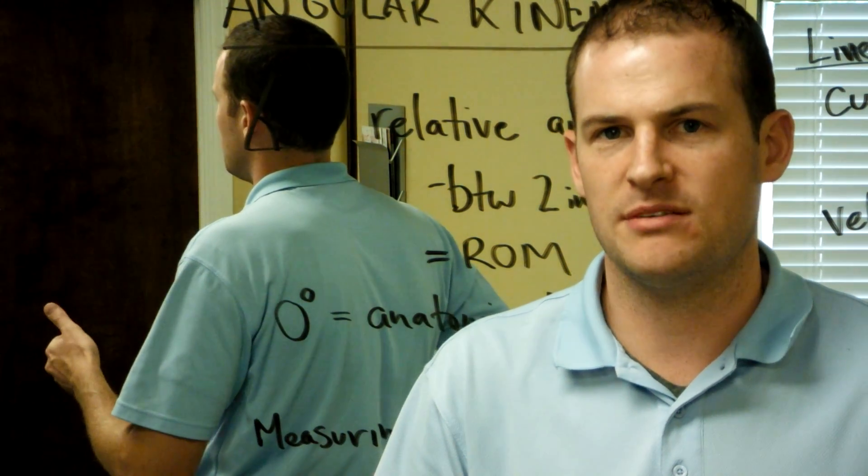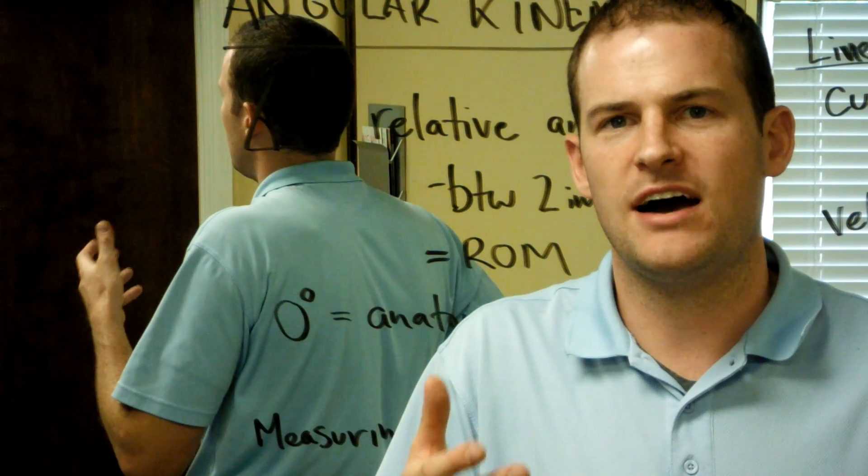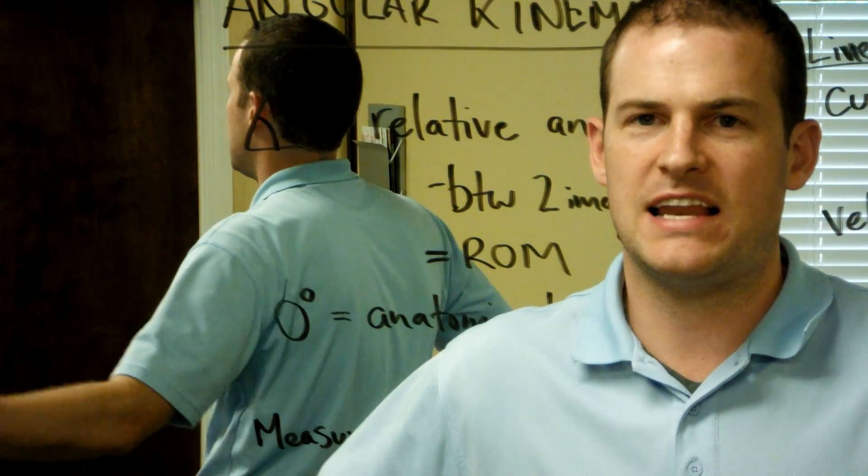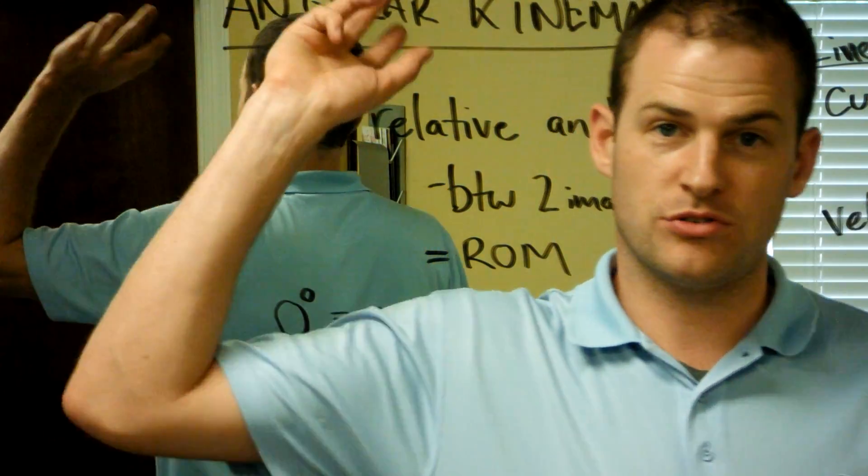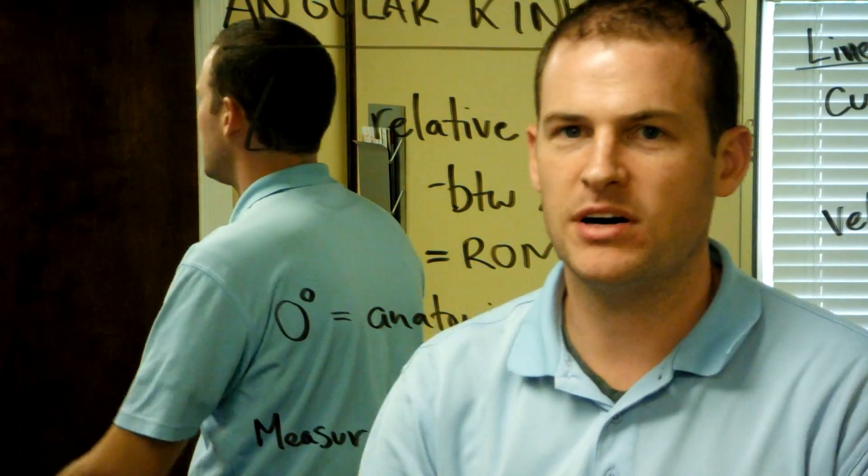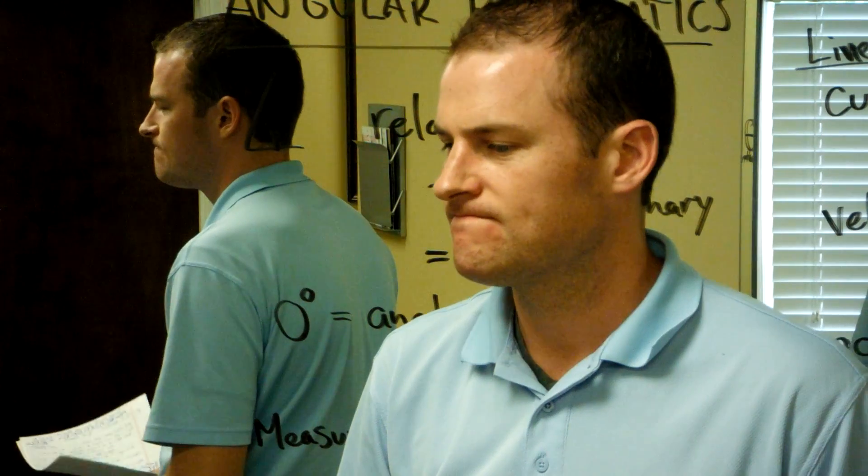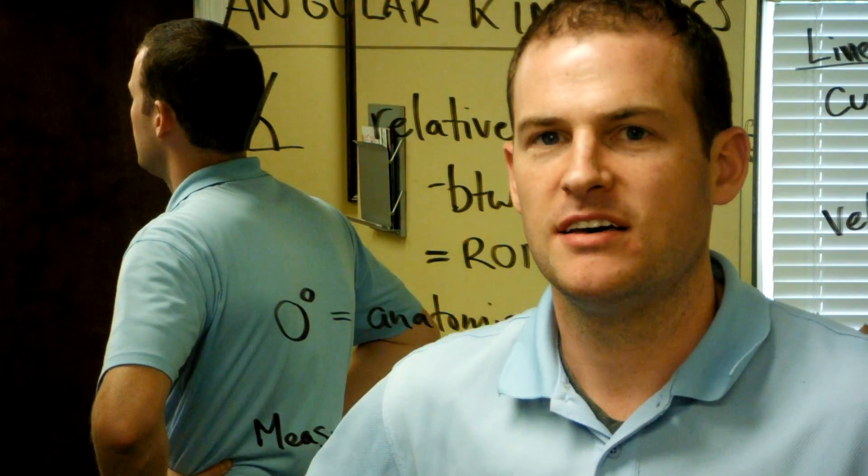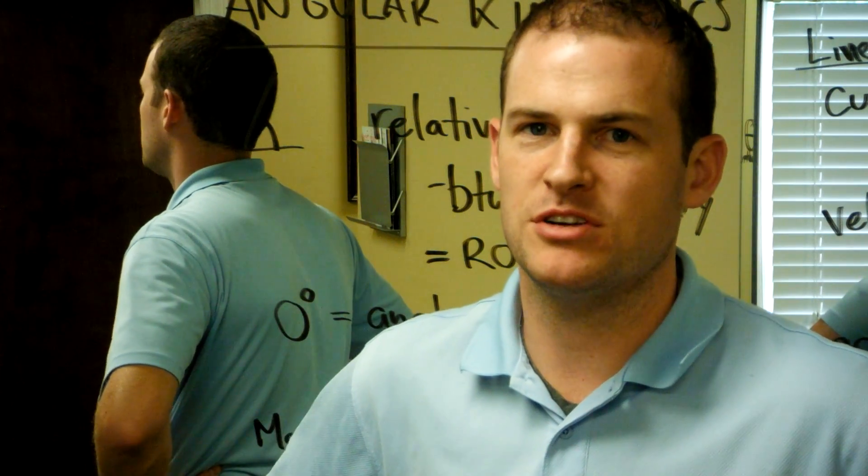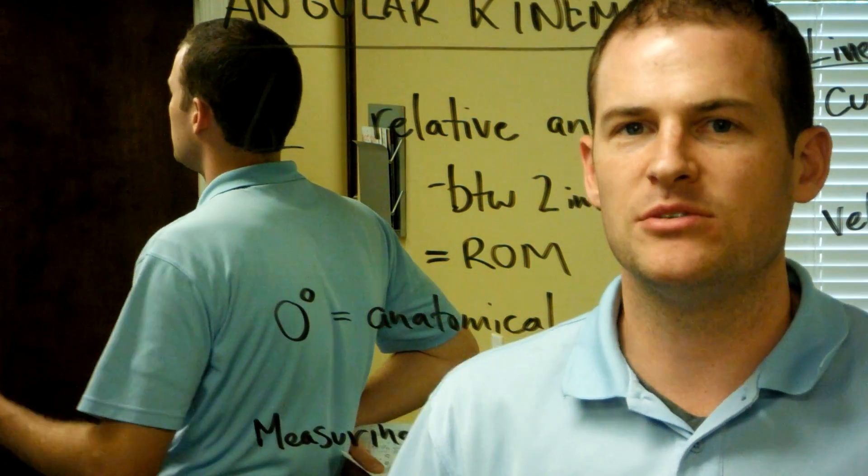We're going to take those same ideas into angular kinematics. The question is: how do you analyze something moving at an angle, such as a bat or a golf club or a shoulder throwing arm or a leg punting a ball? Things as small as elbow motion and finger motion, knee motion. We need to be able to measure how an angle moves.